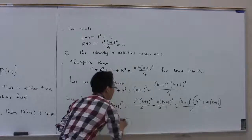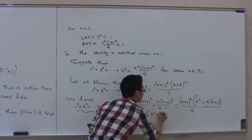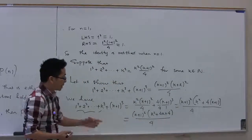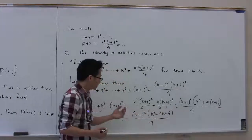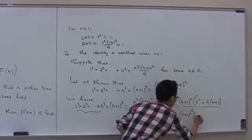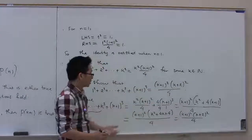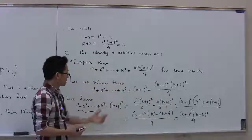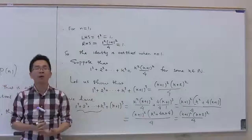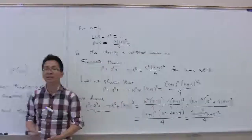This can be written as (k+1) squared times (k squared plus 4k plus 4), all divided by 4. Now, k squared plus 4k plus 4 is exactly (k+2) squared. So this equals (k+1) squared times (k+2) squared over 4, which is the right-hand side of the identity. Therefore, whenever P(k) is true, P(k+1) is true. By mathematical induction, this identity holds for all n in N, completing the proof.